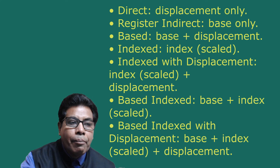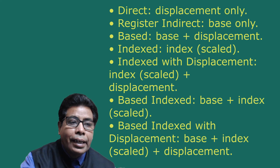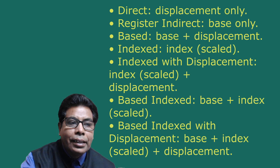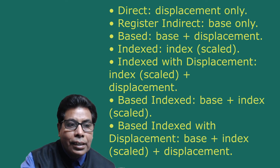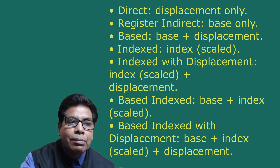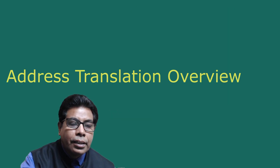The most meaningful combinations of base, index, and displacement yield the following 80386 memory addressing modes: based, base plus displacement; indexed, index scaled, index with displacement, index scaled plus displacement; base index, base plus index scaled; and base index with displacement, base plus index plus displacement.